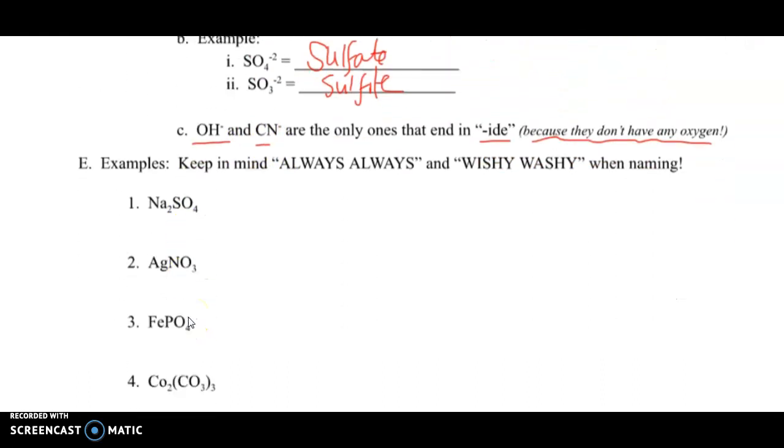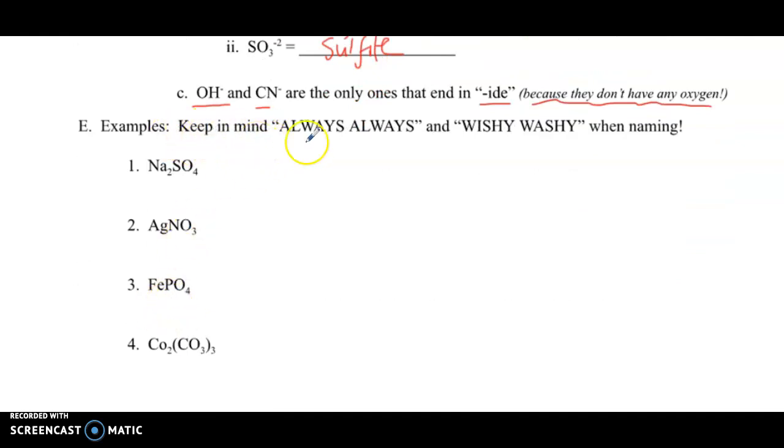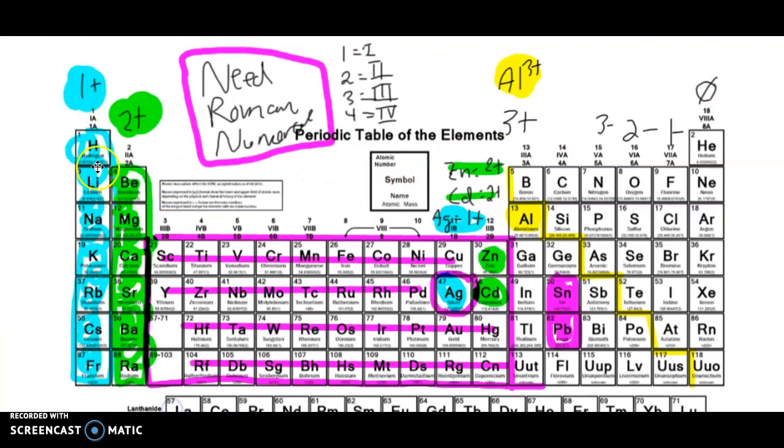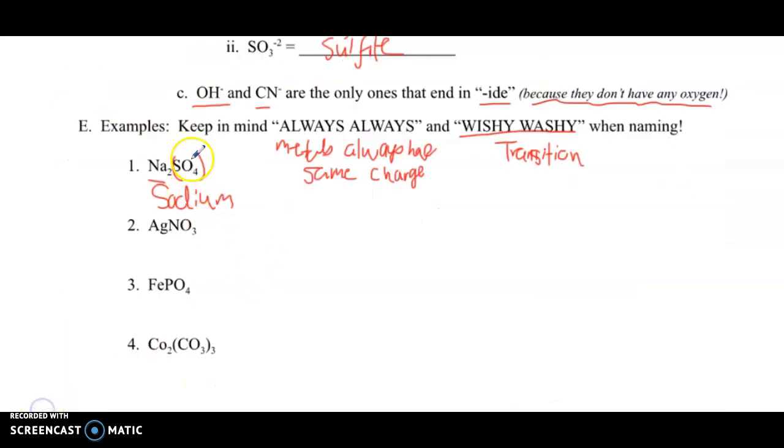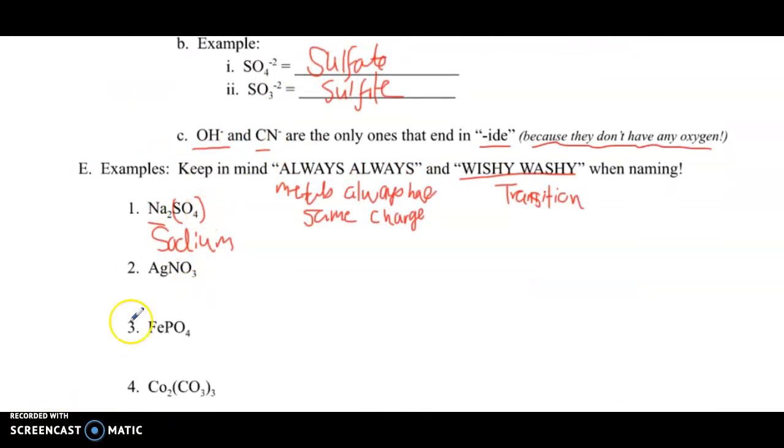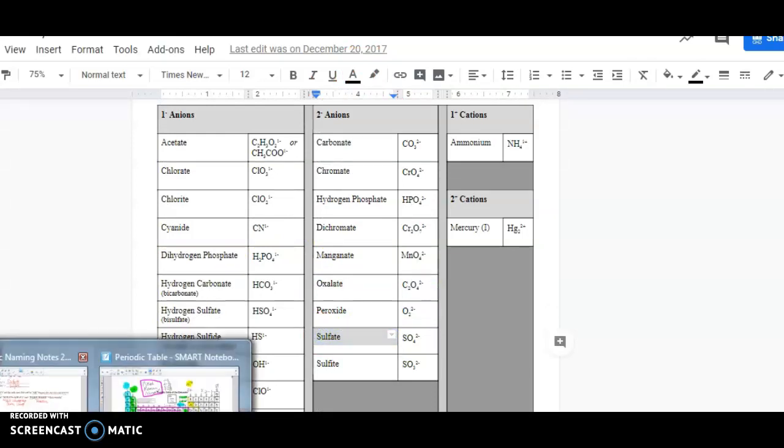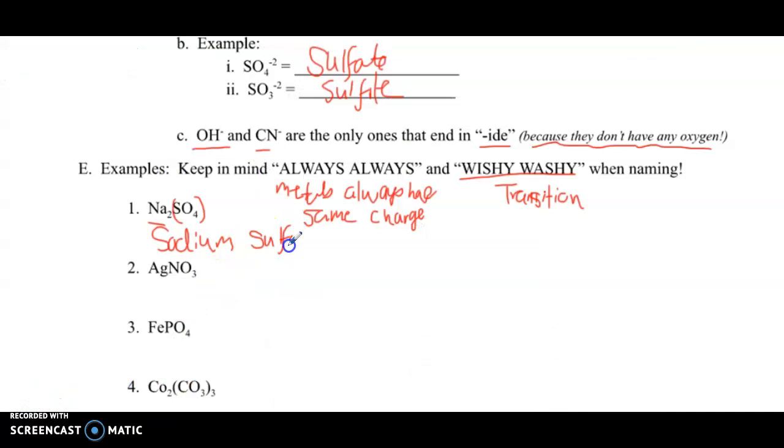Everything's exactly the same as we've learned before. We just are adding that complexity of the polyatomic ions. Here's some examples. Keep in mind, the 'always always' is something you can use to refer to the metals that always have the same charge—that's like your group 1s, your group 2s, aluminum, cadmium, silver, and zinc. And then your wishy-washy, those are your transition metals. They can make several different charges, and you have to make sure you give them a Roman numeral. Let's go through and look at sodium and then SO4. Does sodium need a Roman numeral? Nope, it's in column 1. It's always a 1+, so we just call it sodium. SO4 is sulfate. So this name is simply sodium sulfate.